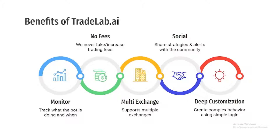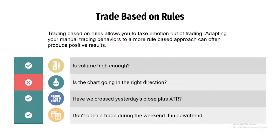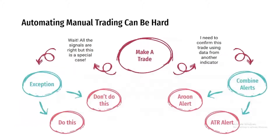It has been said that the best traders have a set of rules in which they operate, allowing them to take emotion out of the equation. Normally, traders' rules can be simple on the surface. However, if you look closer, many times there are exceptions to the rules in special situations which are dealt with differently. This is where normal signal automation fails.